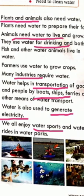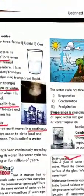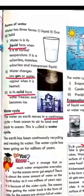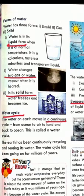Next, we read about the forms of water. There are three forms of water: the first is liquid, the second is gas, and the third is solid.